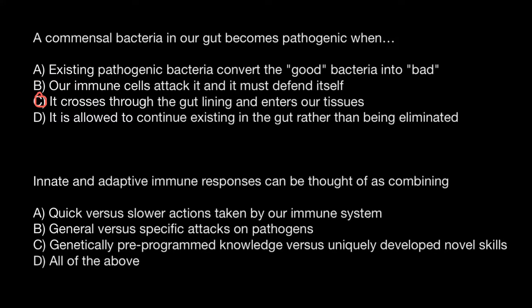Answer A states: a common commensal bacteria in our gut becomes pathogenic when existing pathogenic bacteria convert the good bacteria into bad. This actually happens all the time — we call this horizontal and vertical gene transfer: horizontal between the same species, and vertical between different species. However, this is not what makes commensal bacteria pathogenic. That happens when bacteria cross the gut lining, and that process is what we call infection.